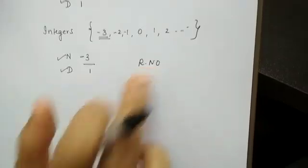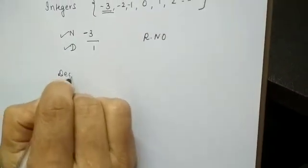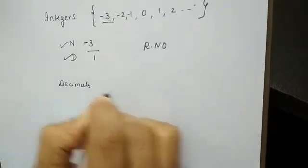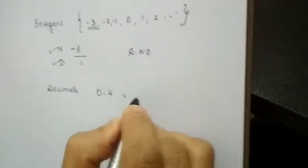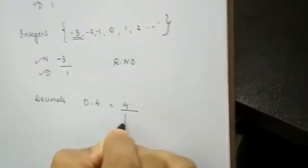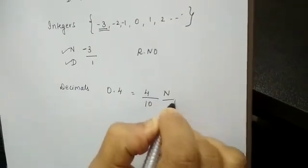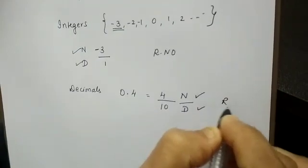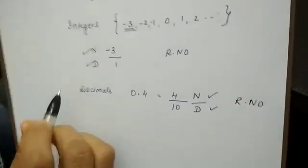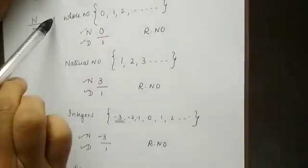What about decimals? Let us take 0.4 for instance. Let us convert this decimal into a fraction: 4/10. 4 is the numerator and 10 is the denominator. So decimals are also rational numbers.